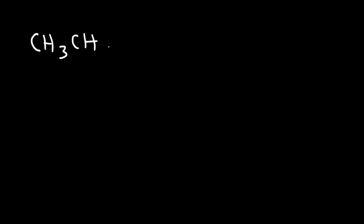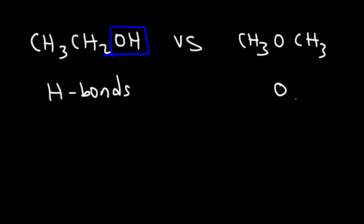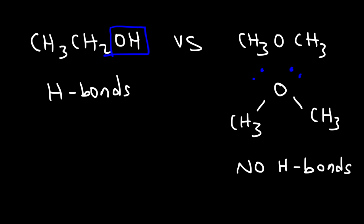Let's compare ethanol and dimethyl ether. Ethanol has hydrogen bonds and is highly polar. Dimethyl ether is also polar because of the oxygen and its bent shape — similar molecular geometry to water — however, hydrogen is not directly attached to oxygen, so it doesn't have any hydrogen bonds. Therefore, because hydrogen bonds produce stronger intermolecular forces than regular dipole-dipole interactions, ethanol is going to have a higher boiling point.